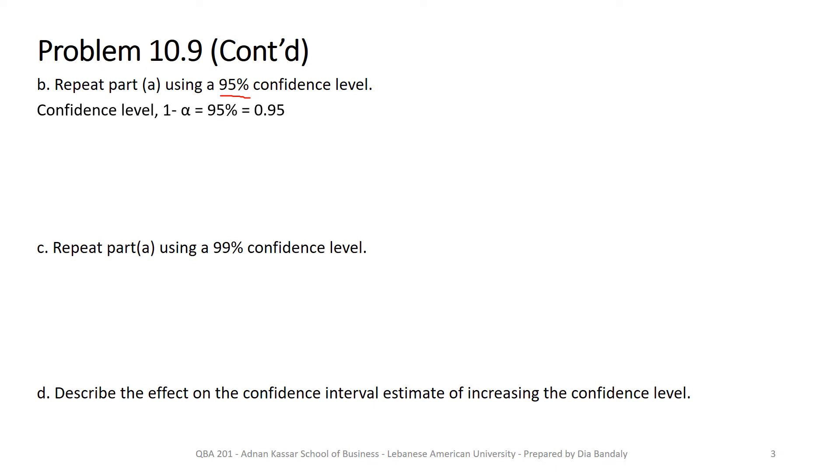So here we go. Now we have 1 minus alpha equals 0.95. So alpha is 0.05. And alpha over 2 is 0.025 now. So we need to look now for a z value such that the area on its right is now 2.5%, while in the previous part it was 5%. So this is 2.5%.